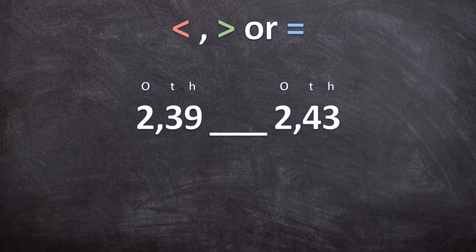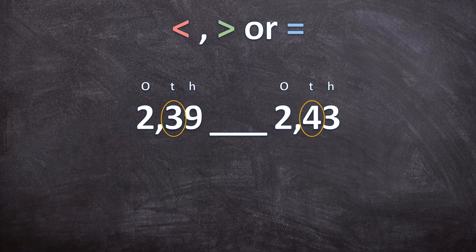We start at the ones — the highest place value here. We have two and two; they are both the same, so we move on to the next place value: the tenths. We ask which is bigger, the three or the four? The four is bigger than the three. It doesn't matter what the hundredths values are — the four is bigger in the tenths place. So 2,39 is going to be smaller than 2,43.